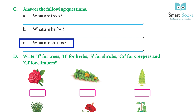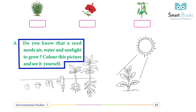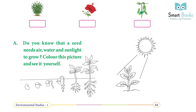D: write T for trees, H for herbs, Sh for shrubs, Cr for creepers, and Cl for climbers. Do you know that a seed needs air, water, and sunlight to grow? Color this picture and see it yourself.